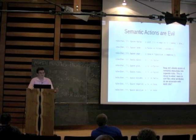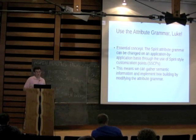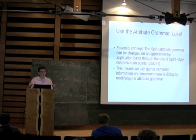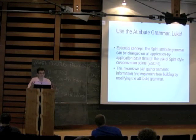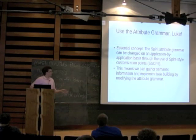If we're not supposed to use semantic actions, then what are we supposed to do? The answer is that I want people to use the attribute grammar — instead of writing semantic actions, I want you to specialize the Spirit customization points to get the desired behavior from Spirit. Spirit is almost completely configurable through a set of customization points, which admittedly not all of them are well documented, but that's something we're working on. You can do tree building and gather semantic information through the use of attributes.